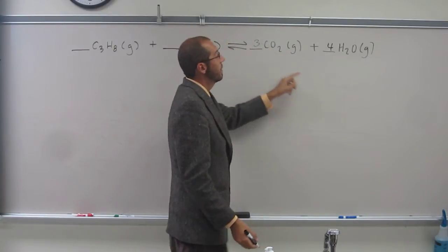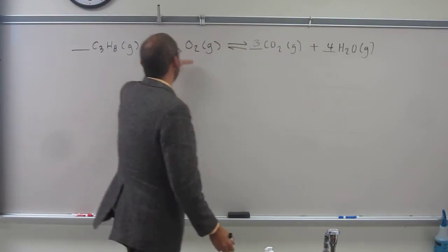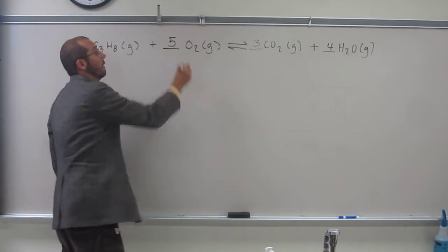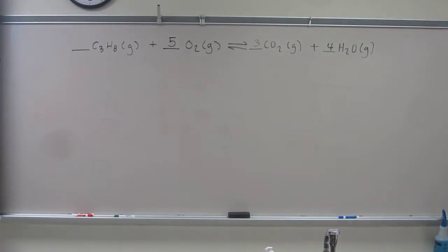Three times two is six. Plus four is ten. Divided by two is going to be five. Okay? So that's how you balance that reaction.